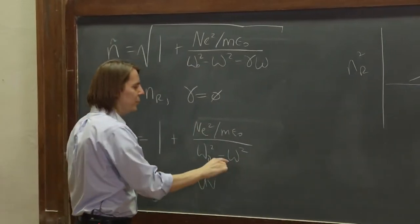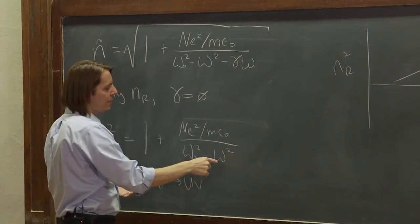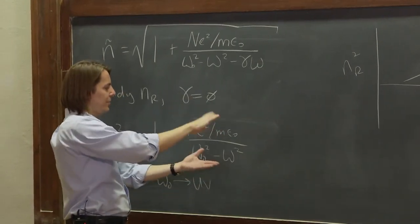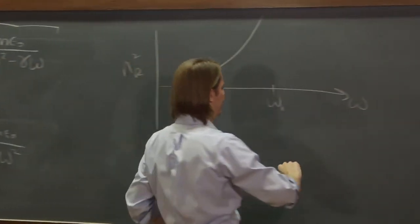And if you want to think about the other side, as omega is bigger than omega naught, then this thing still comes down, this thing goes towards zero, you approach 1, but it's negative, so it probably looks something like this.